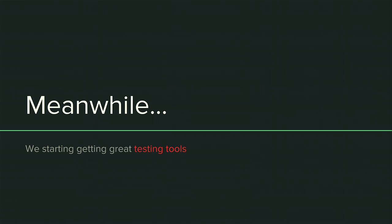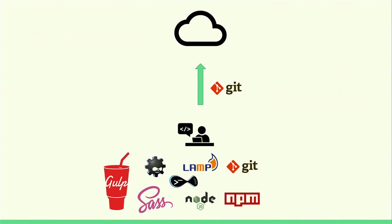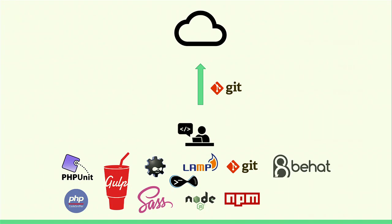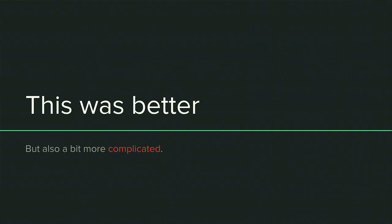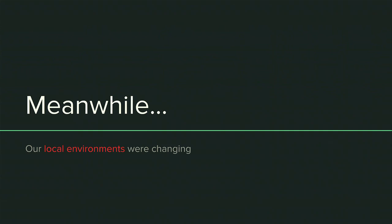Testing tools also came on the scene — particularly in the PHP and Drupal communities we started getting things like PHPUnit for unit tests to prevent regressions, PHP Code Sniffer to make sure you're following Drupal coding standards, and Behat — a more recent one where you write functional tests in business domain language you can show to stakeholders. But if you're using Behat, you might have to install Selenium, and Selenium requires Java, or maybe you're going to use PhantomJS instead. This is better, but it's getting a little scary — a little overwhelming, some heart palpitations.